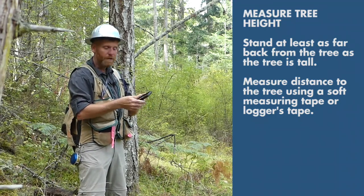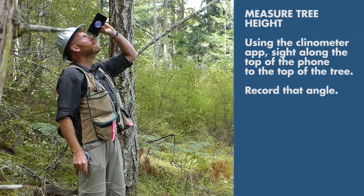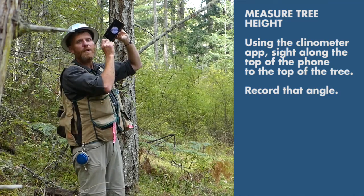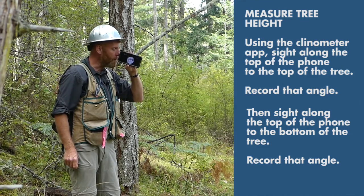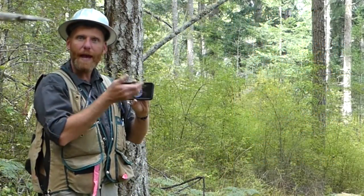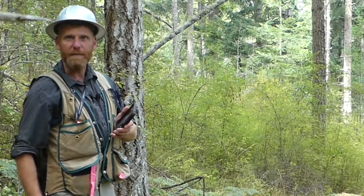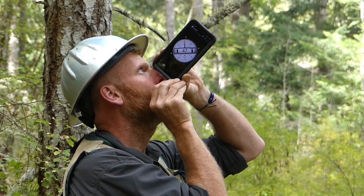The next step is to use the clinometer app on your phone. By sighting along the top edge of the phone, look towards the top of the tree and record the top angle. Then sight along the top of the phone to the base of the tree and write down the base angle. With those two numbers, you can enter them into a tangent formula on your calculator to calculate the height of the tree. A good clinometer app will have a lock function that, once the phone has settled on that angle, will lock that number in so you can confirm you have it correct.